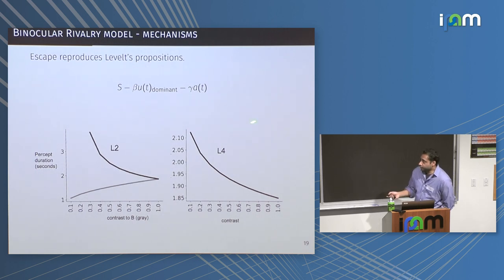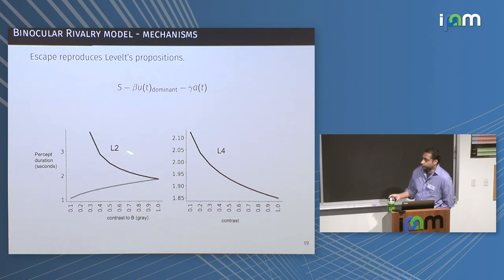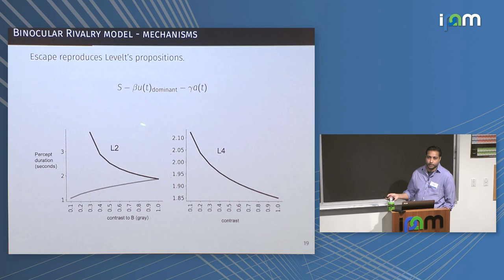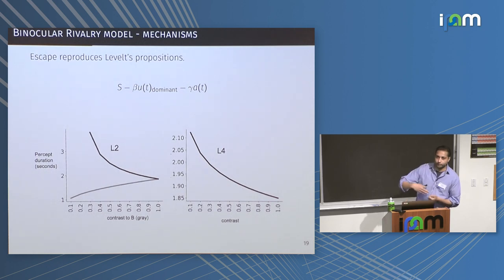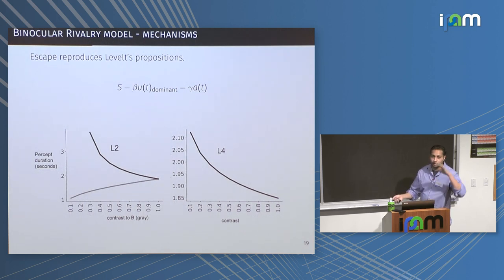Looking at Levelt's second proposition: you're changing contrast for only the gray population, but the main effect is on the other population — the one you didn't alter. The reason this illustrates an escape mechanism is that as you decrease contrast S for the gray population, you're changing the distance from threshold for that suppressed population. As you make the drive lower for the gray population, it takes longer for it to reach escape, which allows the dominant population to stay on for a longer period of time.